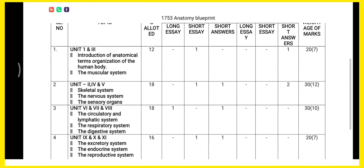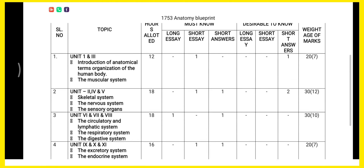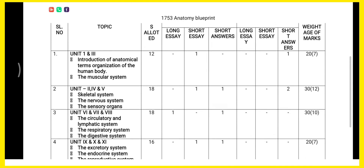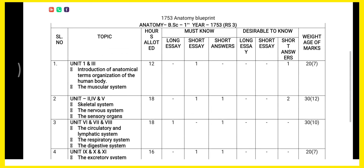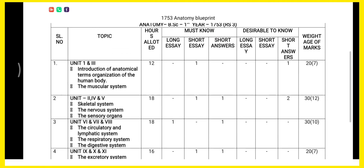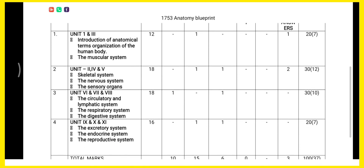Unit 6, 7, and 8 cover the circulatory and lymphatic system, the respiratory system, and the digestive system. The total weightage of these chapters is 10 marks. There is a 90% chance there will be a 10-mark question and also a 2-mark question. So there is an 80 to 90% chance they will ask a 10-mark question from these units.